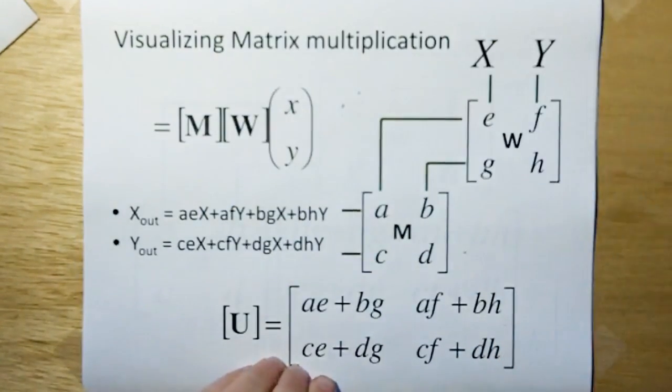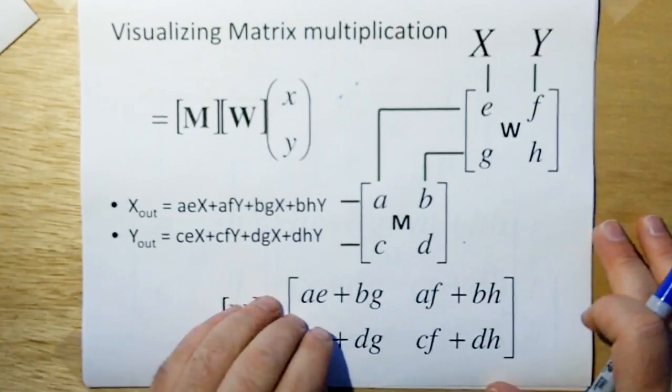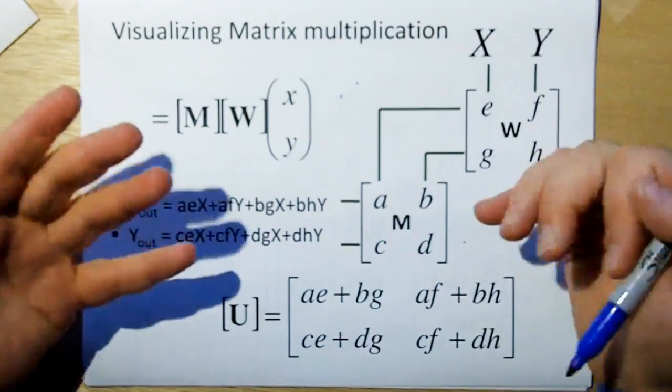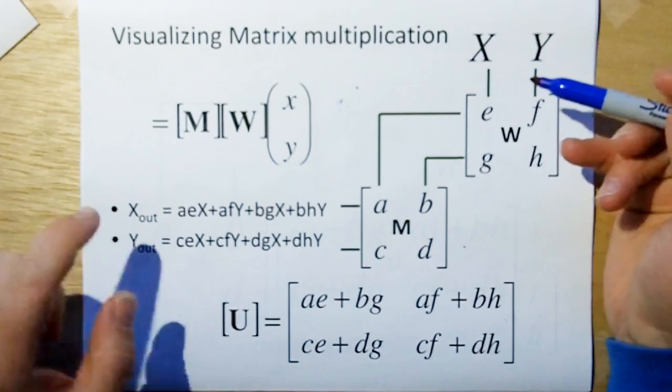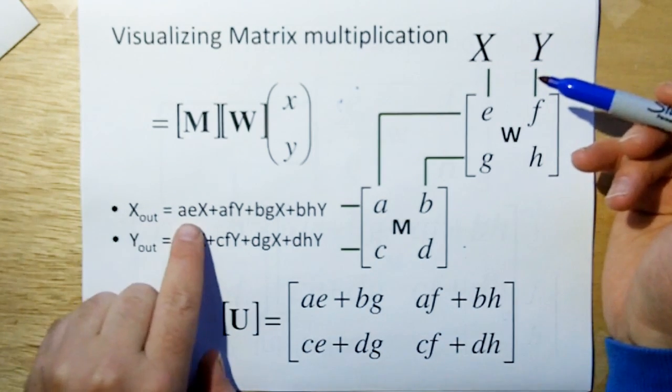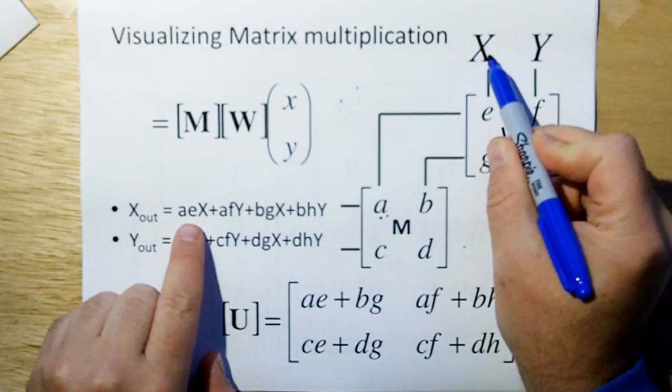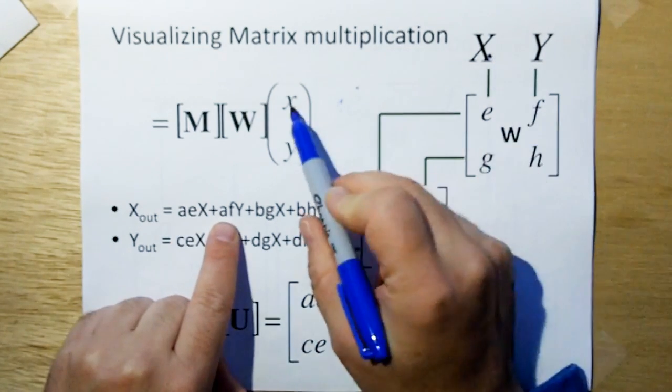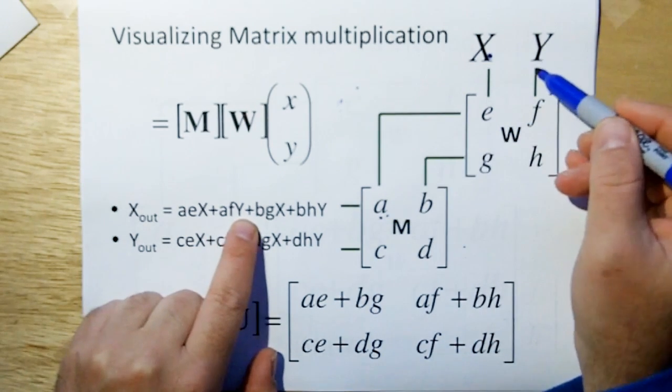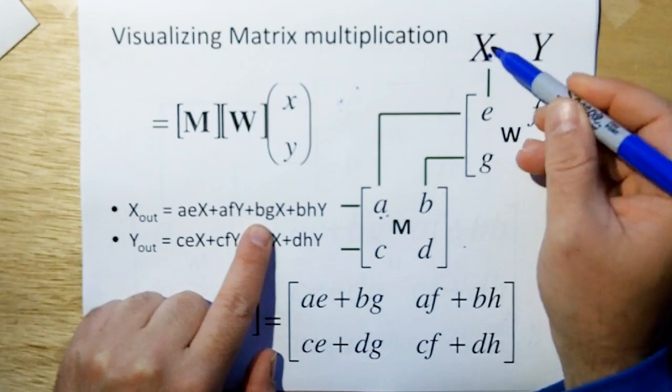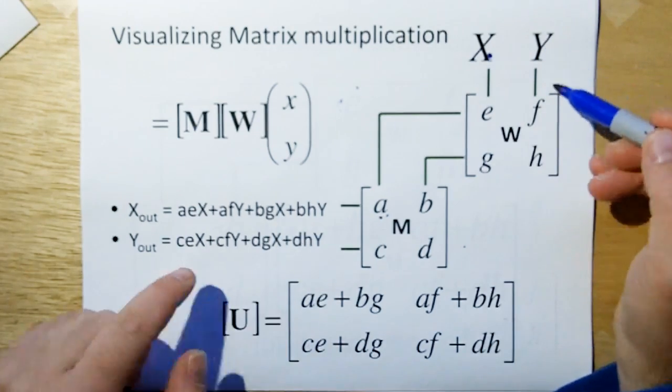Let me show you what this looks like pictorially. We can figure out how to do matrix multiplication right from this diagram here. If we just say our X output is going to be, if we just work backwards through, A times E times X, which is the X component of the vector, plus A times F times Y, plus B times G times X, plus B times H times Y. And we do that for the next line.